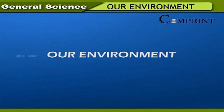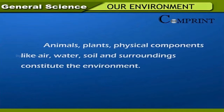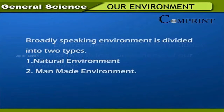Our environment — animals, plants, and physical components like air, water, soil and surroundings — constitute the environment. Environment is that which includes living and non-living components of our surroundings. Broadly speaking, environment is divided into two types: one, natural environment; two, man-made environment.